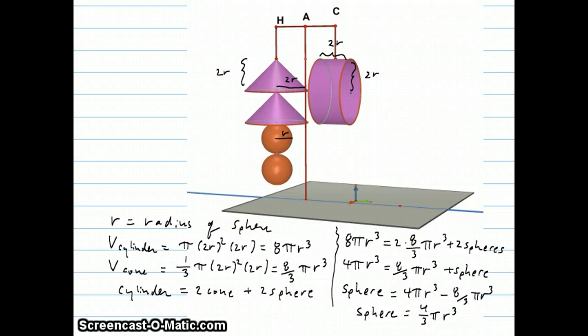But for now, let's just say after he's established this, we could say that the volume of the cylinder ends up being 8 pi r cubed. The volume of the cone is 8 thirds pi r cubed. The cylinder is two cones and two spheres.